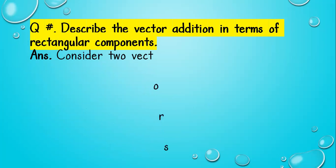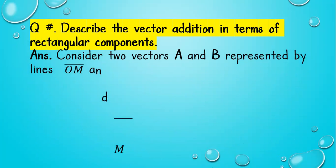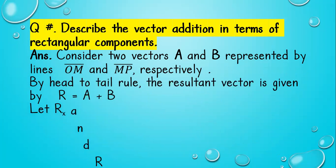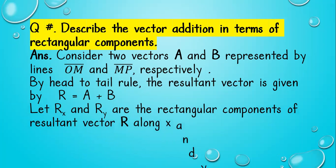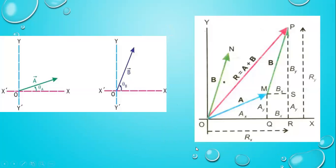Consider two vectors A and B represented by lines OM and MP respectively. By the head-to-tail rule, R is equal to A plus B. Let Rx and Ry be the rectangular components of vector R along the X-axis and Y-axis respectively.